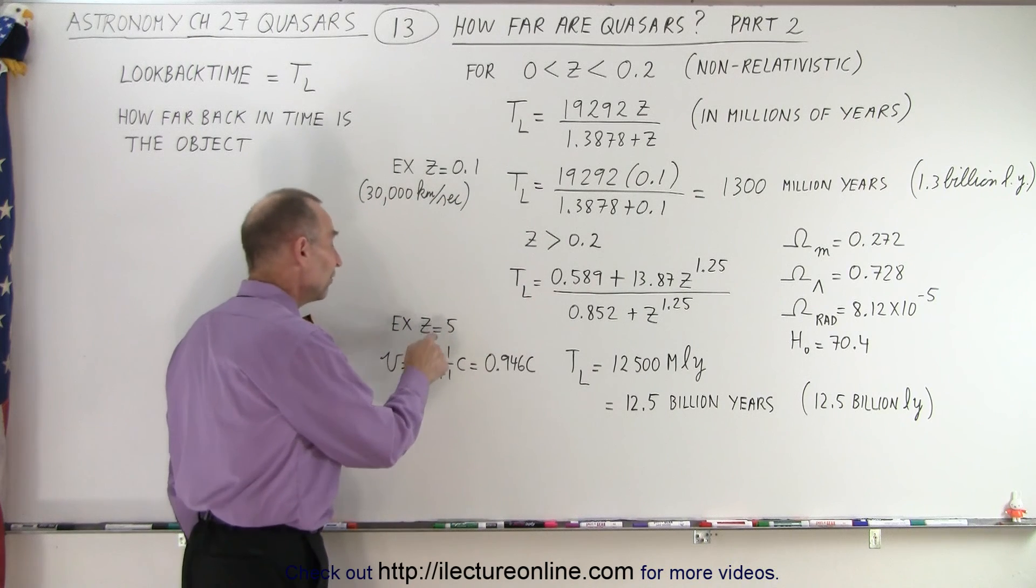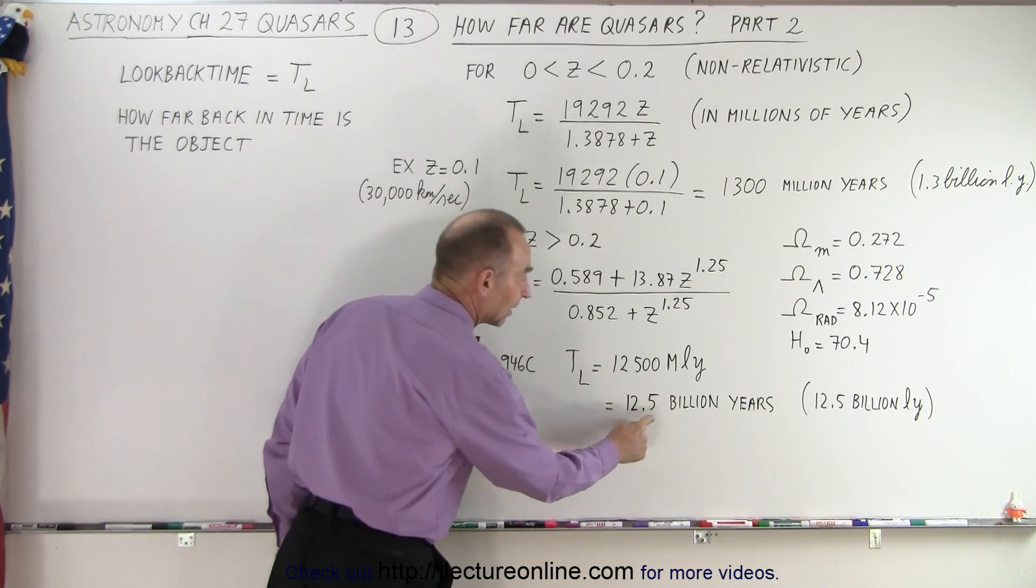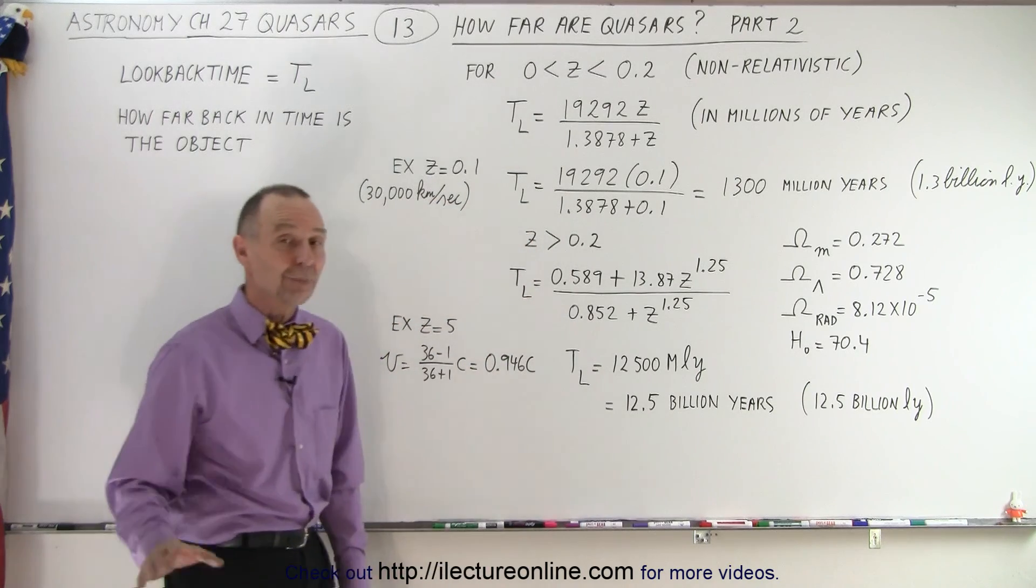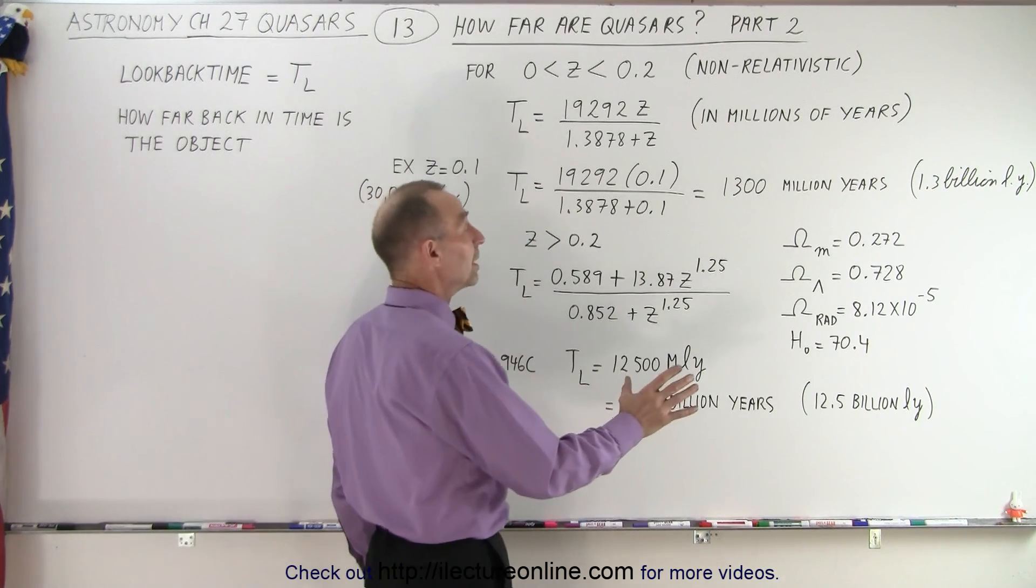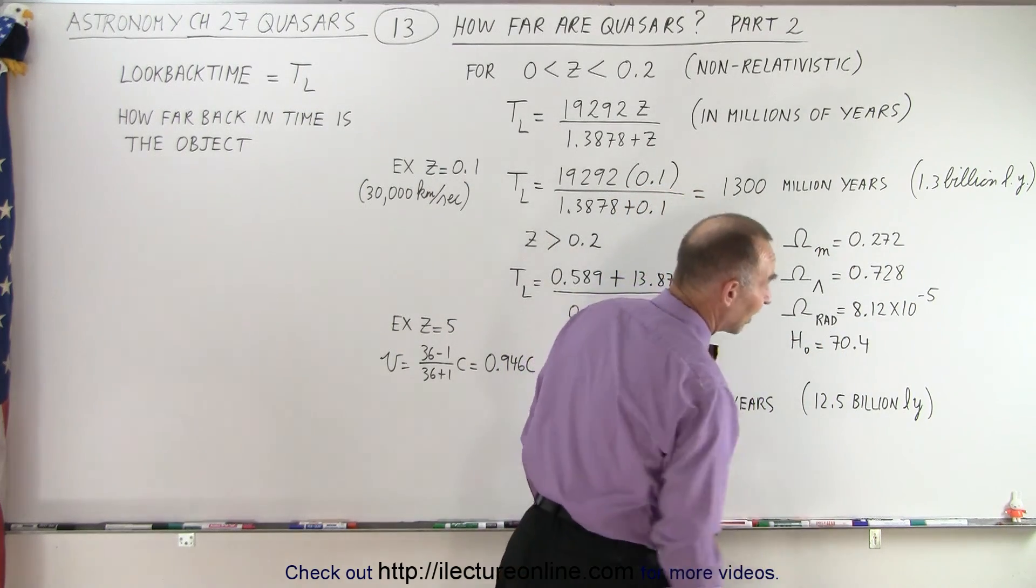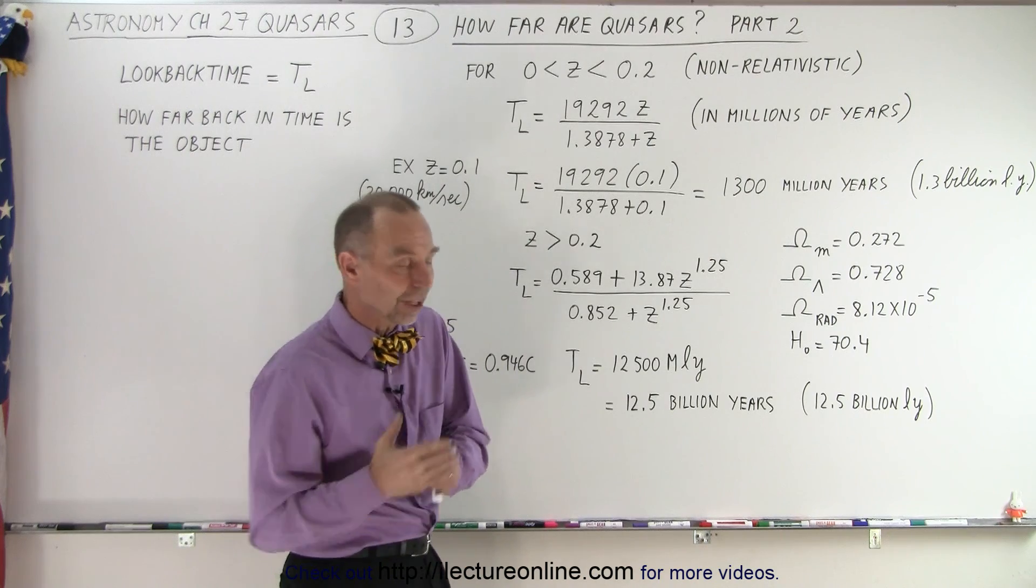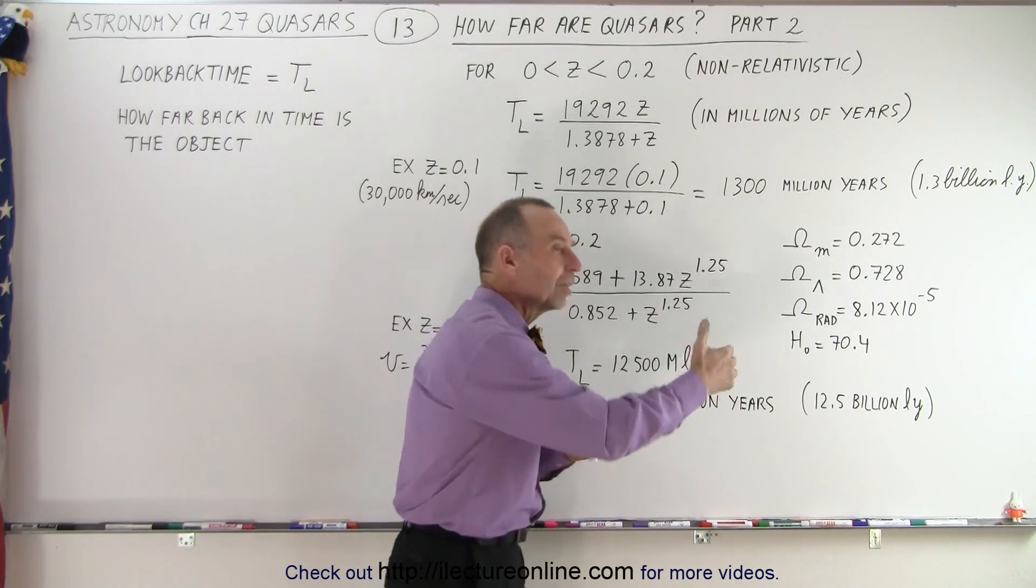In other words, if we receive light that has a redshift z equals 5, then the light left the object 12 and a half billion years ago, presuming all these constants are correct. That then translates to a distance of 12 and a half billion light years that the object was at the moment the light left.